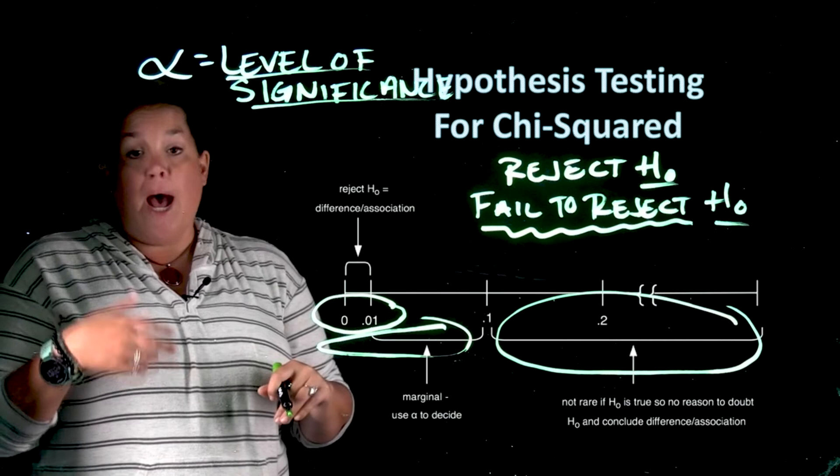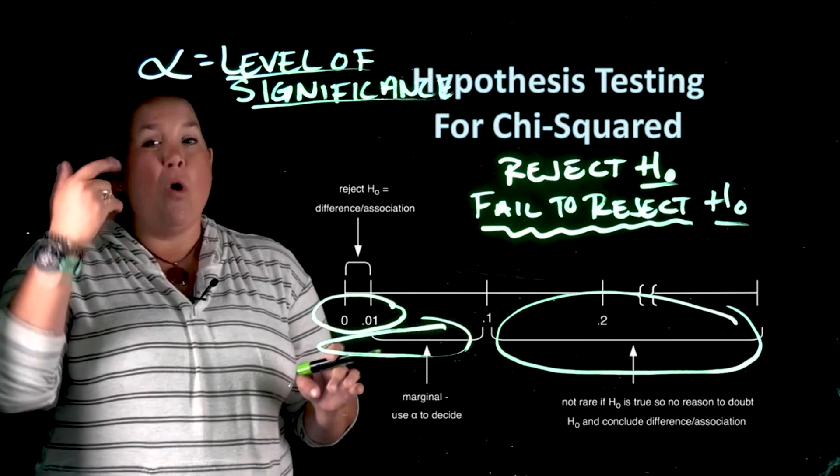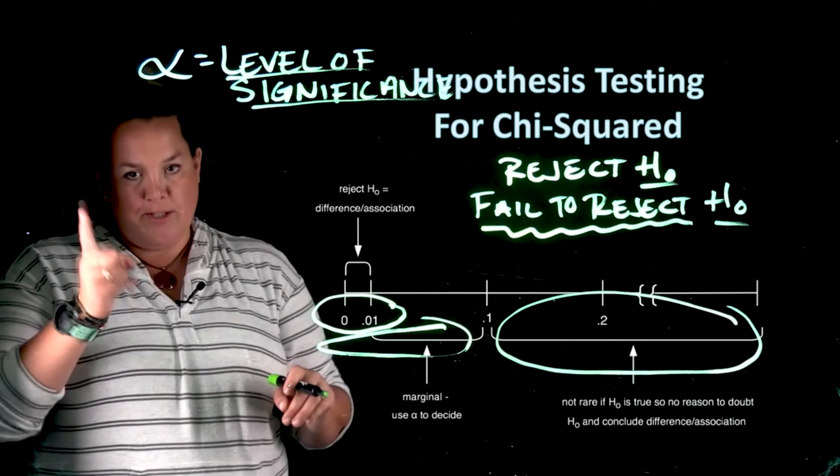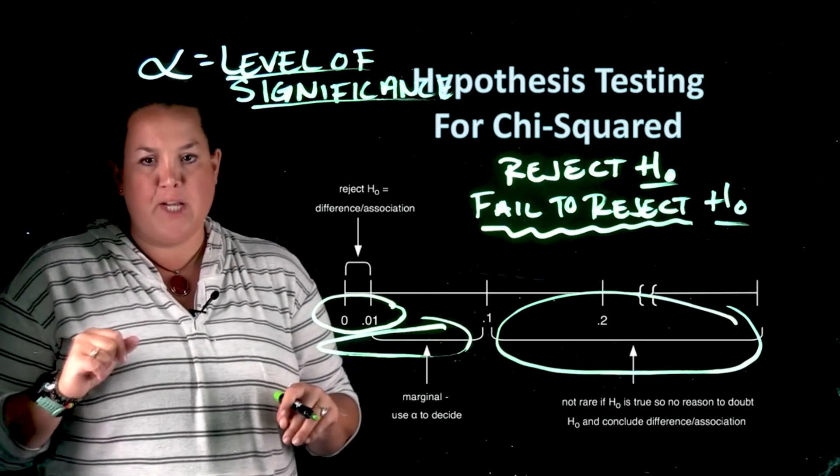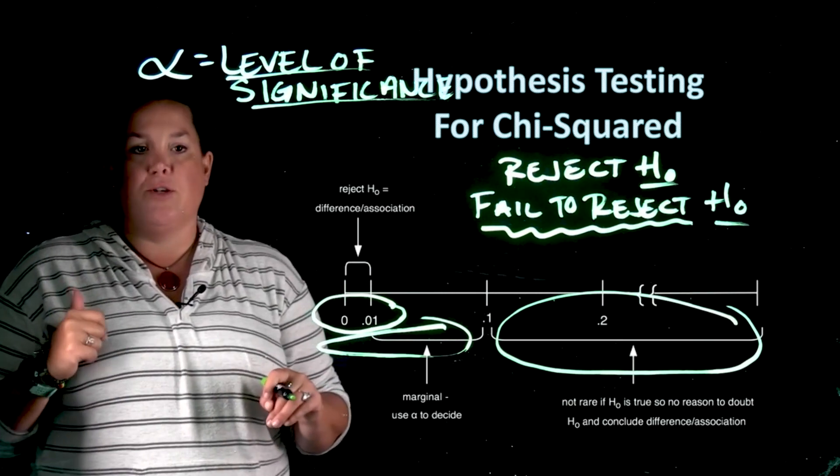If you're not, different disciplines use different alphas that are fairly consistent, or the majority of the time it's 0.05. So if people forget to tell you or if you're not sure what to use, 0.05 is a good one.